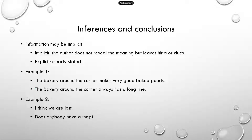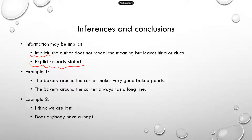Now when you read something, there is some information that's explicit, which is clearly stated, so it's very easy to identify that information. But a lot of the information is implicit — that means the author does not make it very clear in the writing, but leaves hints or clues for you to figure out, for you to make inference, for you to draw conclusions.